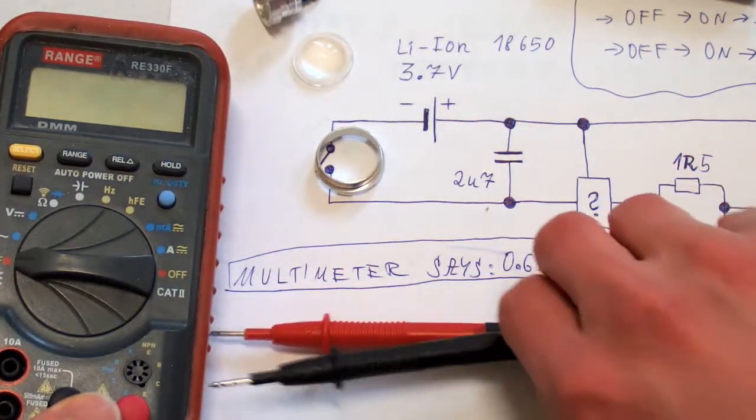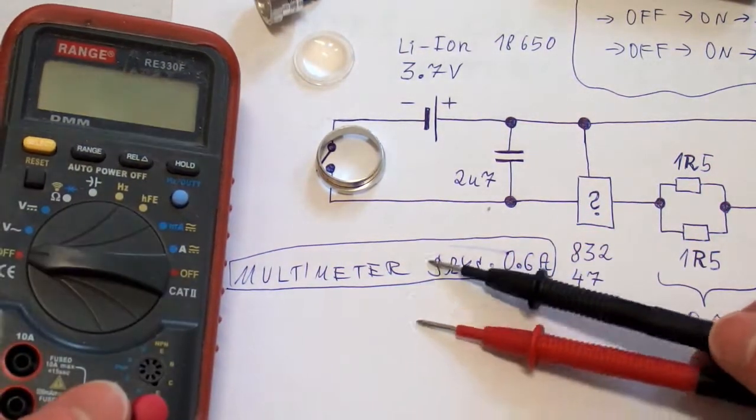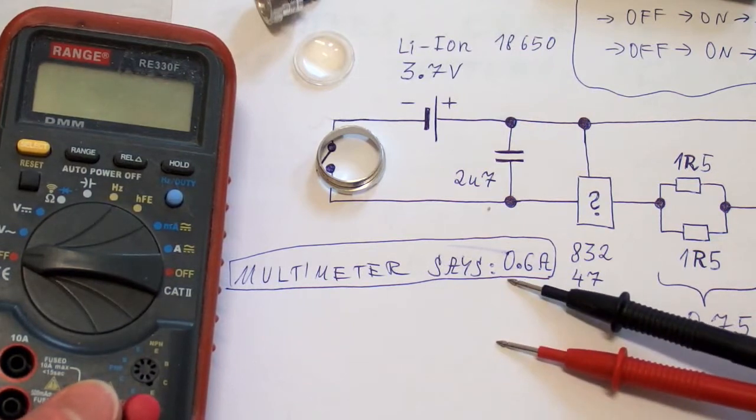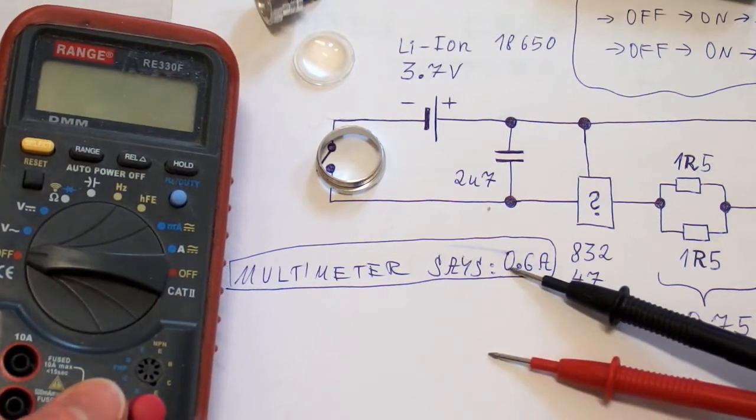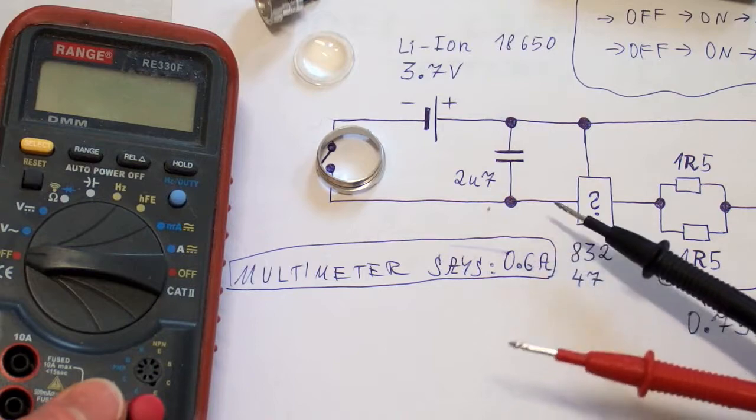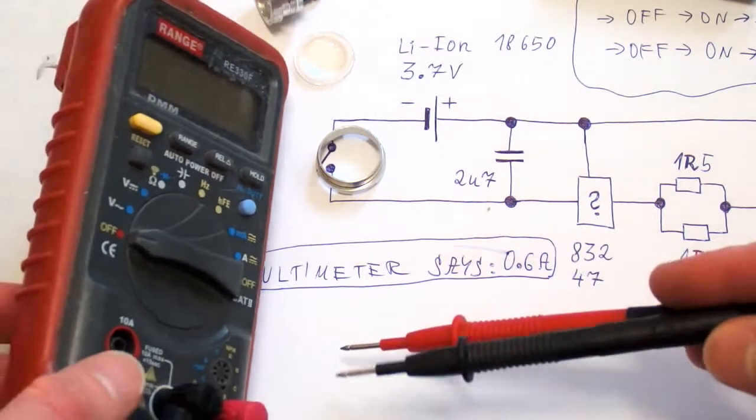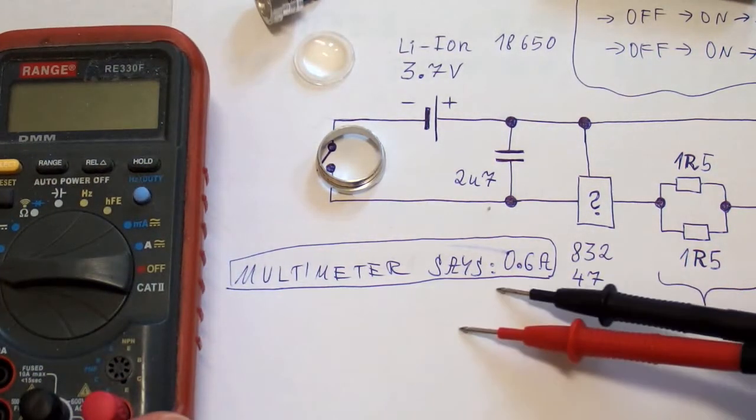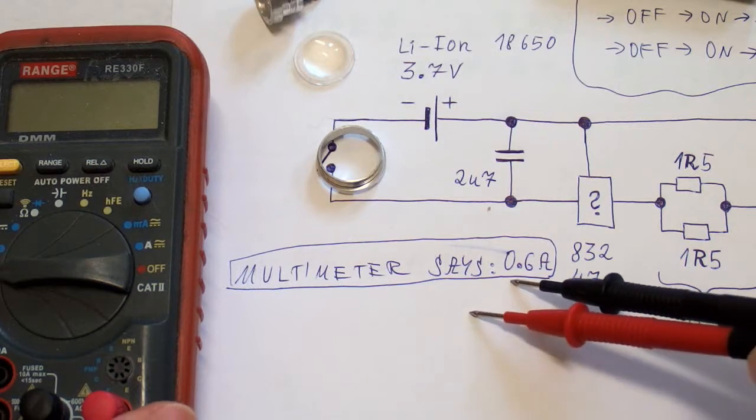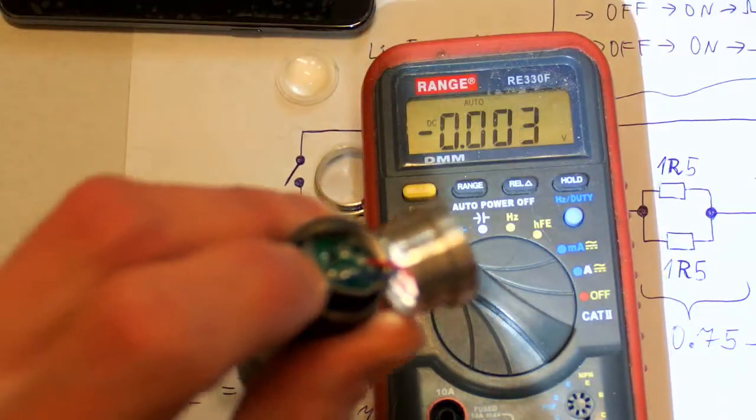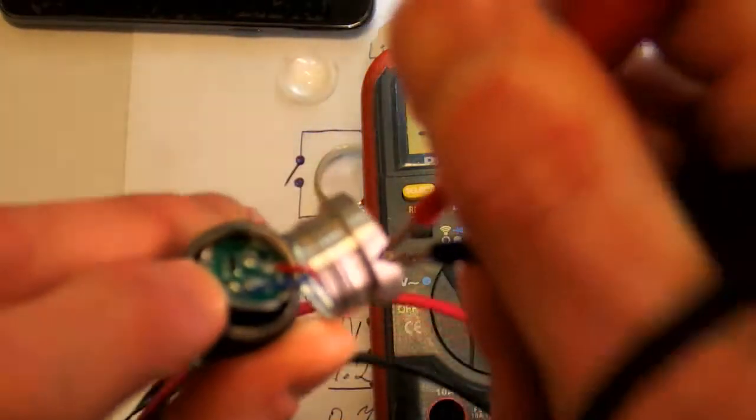And now let's find out what is the current and power of the LED. I was trying to measure the current using my multimeter and it says 0.6 amps. But because of the resistance of my multimeter, the measured current is probably lower than the real one. So let's take a fresh battery once again and let's try to measure the voltage across this resistor.